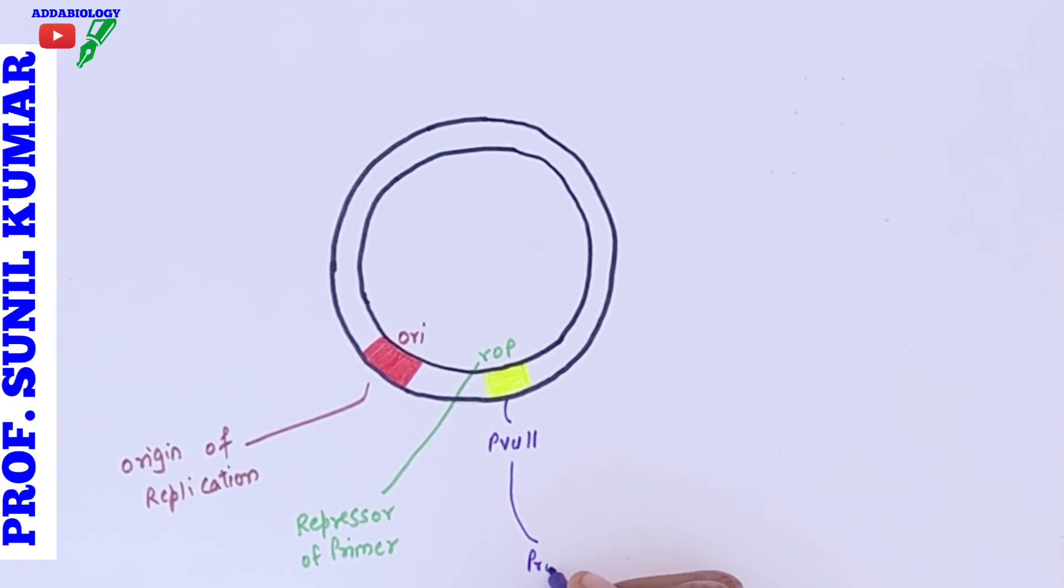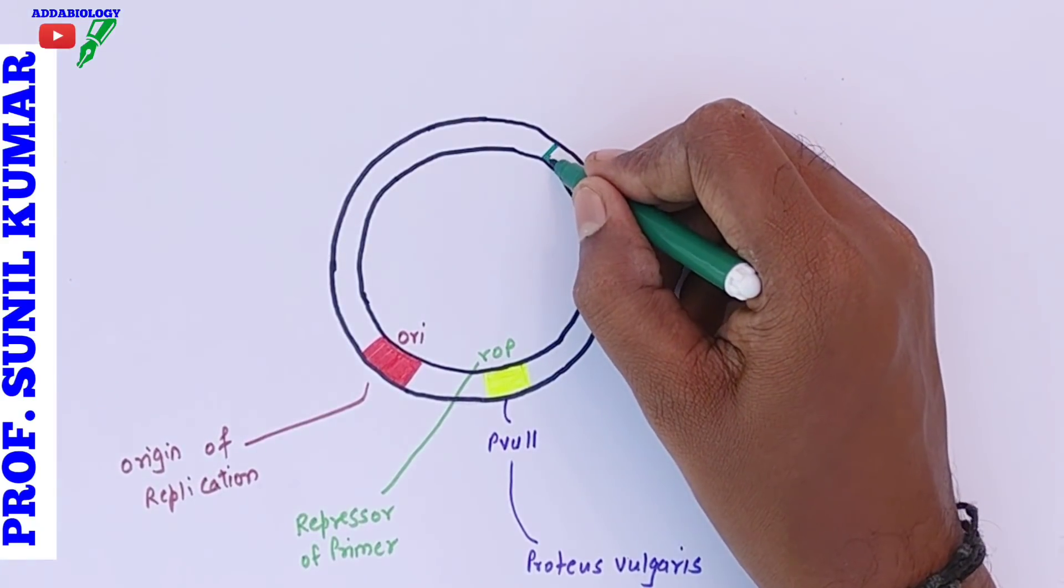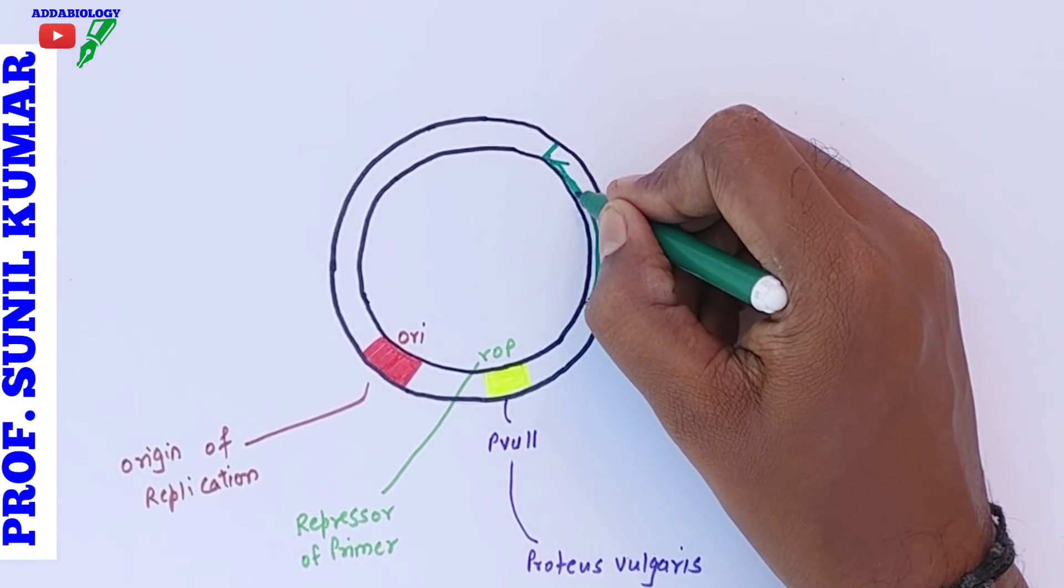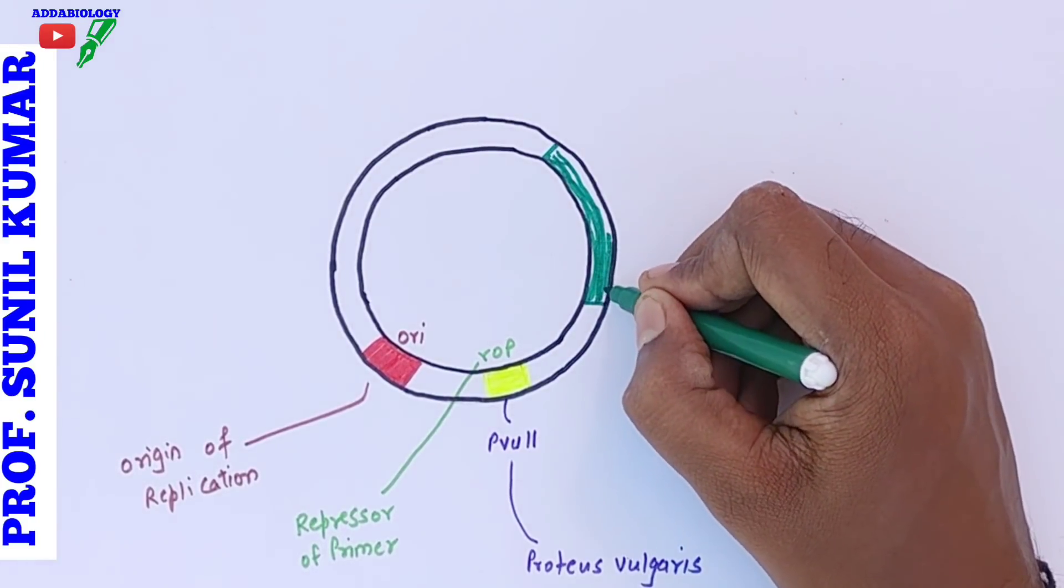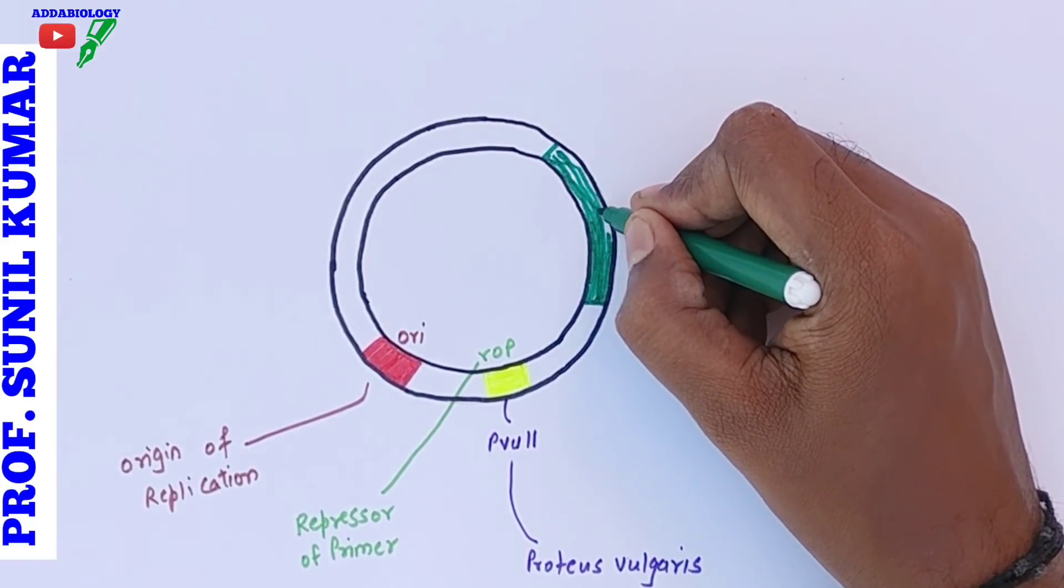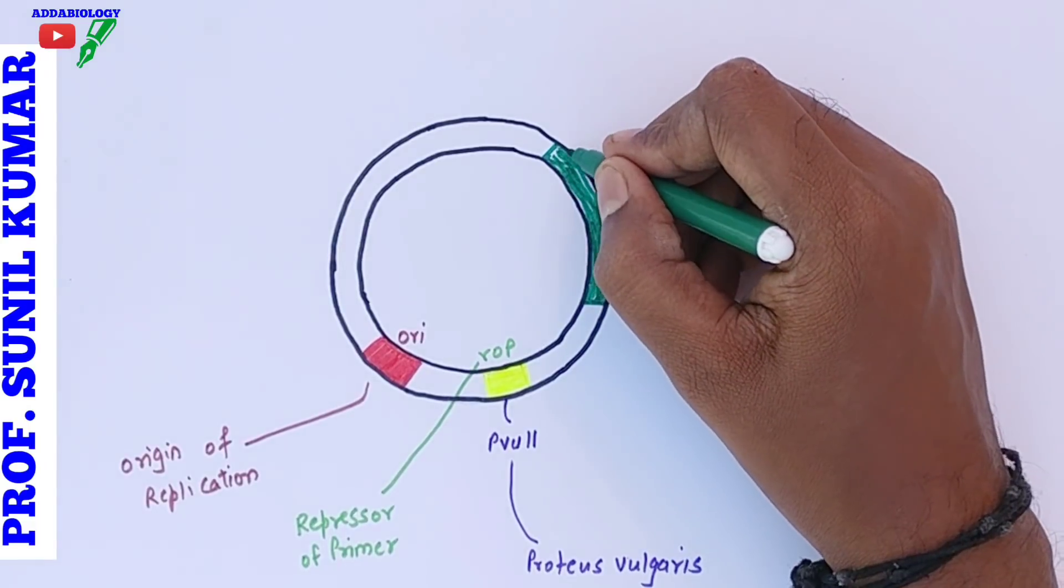In this rop we are going to get one enzyme that is PvuII. What exactly is PvuII? It stands for Proteus vulgaris 2. Proteus becomes the genus, vulgaris becomes the species, and 2 becomes the order of discovery.